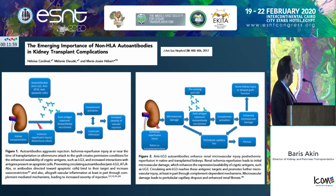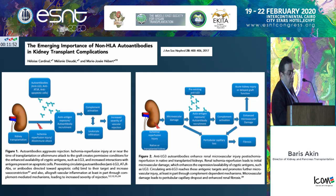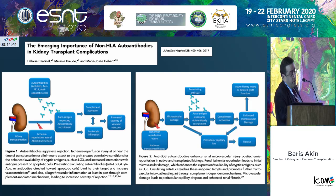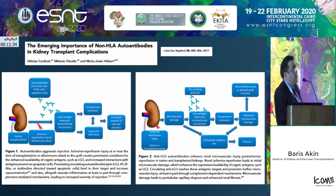The ischemic reperfusion, alloimmune attack, and autoantibodies are coming together. Even in native kidneys, when you have ischemia and microvascular damage, as shown in figure two, this can lead to enhanced microvascular damage and result in fibrosis, acute kidney injury, or delayed graft function in the patient.